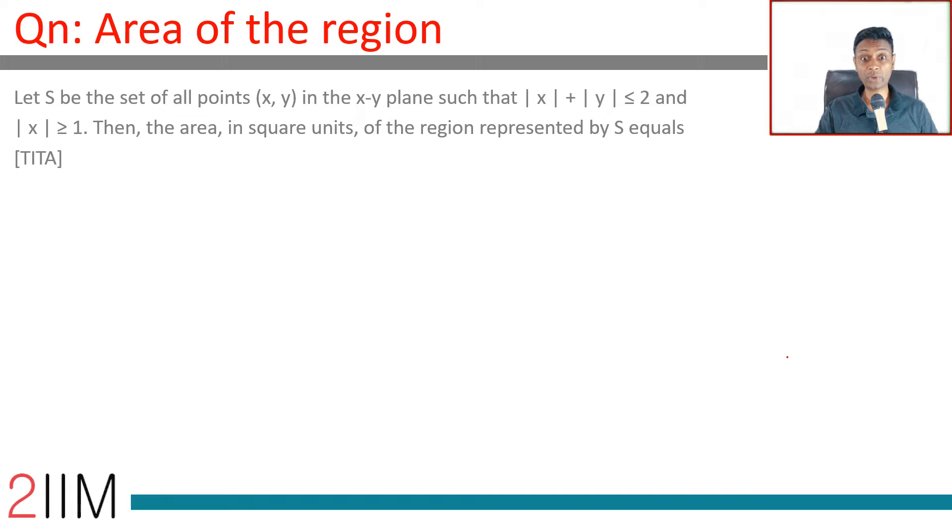Let S be the set of all points (x, y) in the xy-plane such that |x| + |y| ≤ 2 and |x| ≥ 1. Then, the area, in square units, of the region represented by S equals...